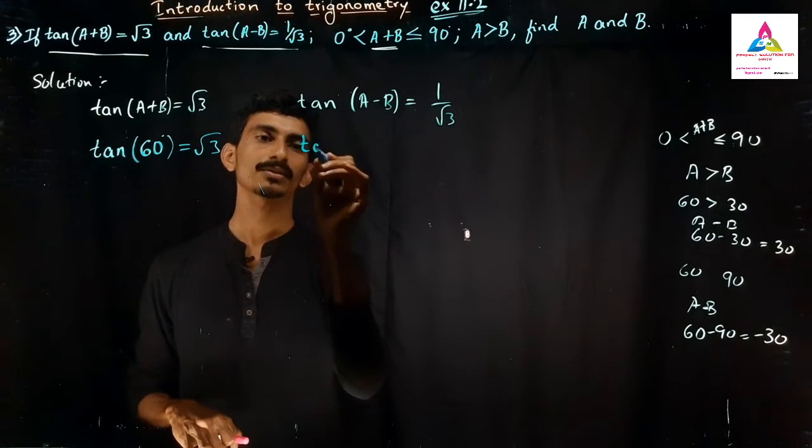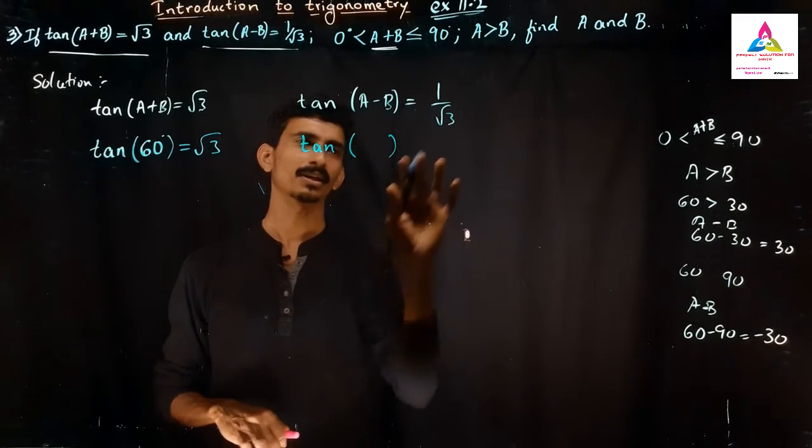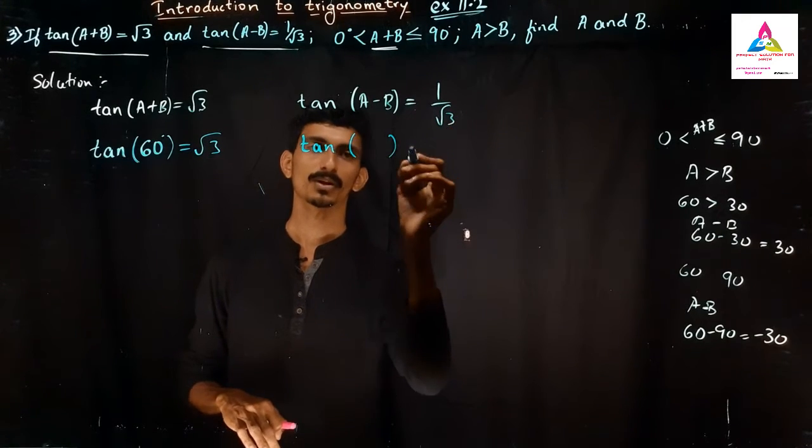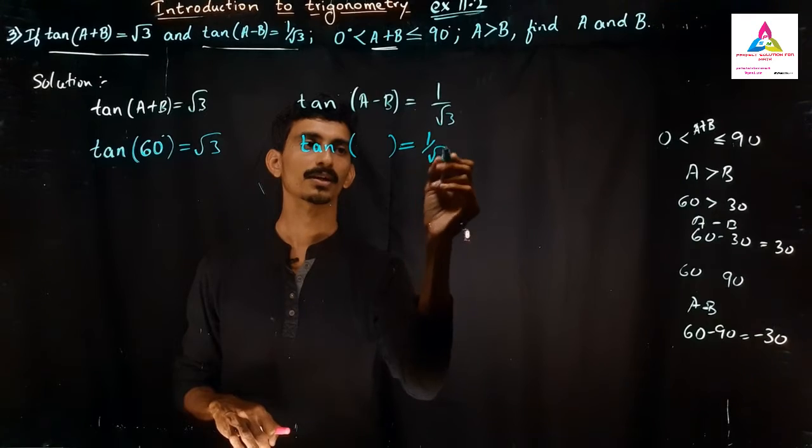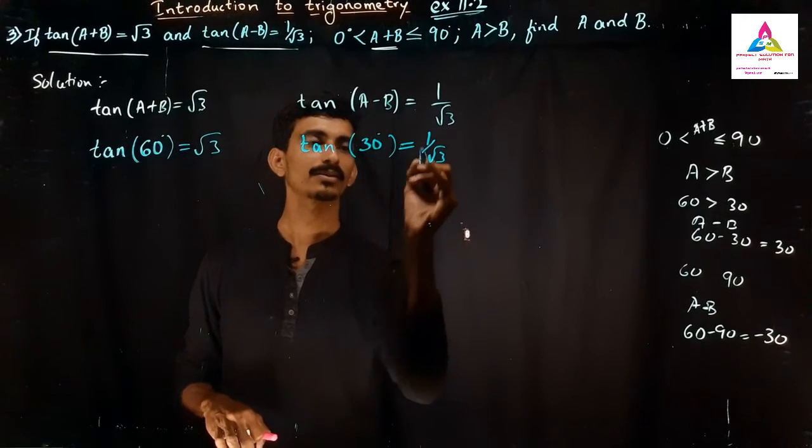Similarly if you will go for this, tan which angle? Don't bother A-B. Let it be anything. Which angle value? Tan of function which angle value will be 1 by root 3? That you have to consider. So obviously if you will see correctly, the tan 30 degrees value is 1 by root 3.